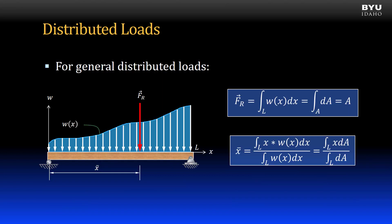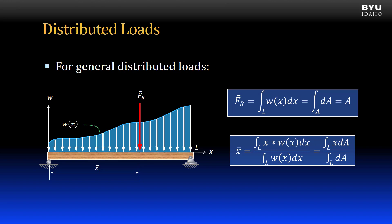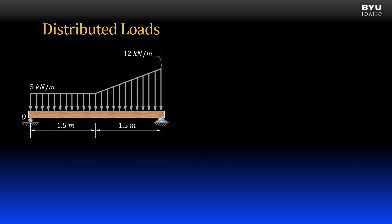In summary, for any shape of distributed load we get the resultant force as the area under the load function — the integral of the load function over its length. We get the location of the centroid as the integral of x times the load function divided by the integral of the load function. Often calculus is not necessary; if a load can be divided into simple shapes, we won't need it.